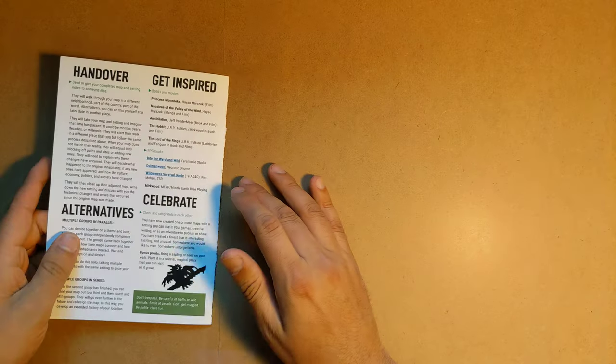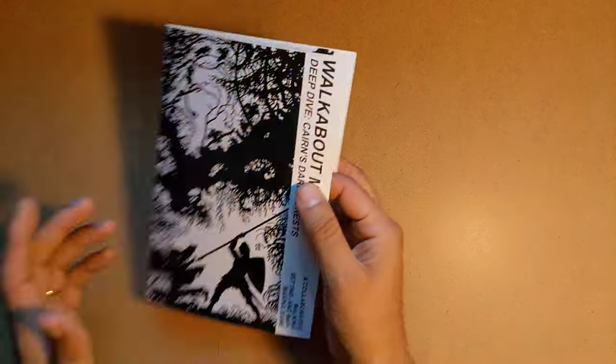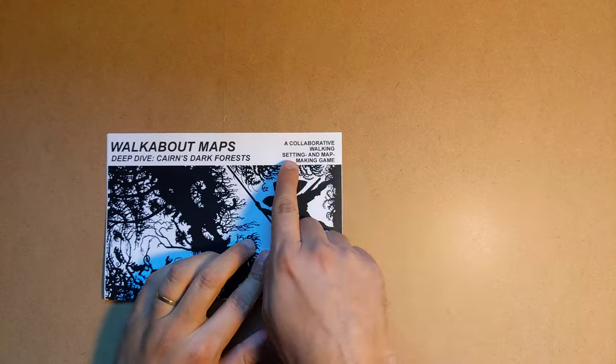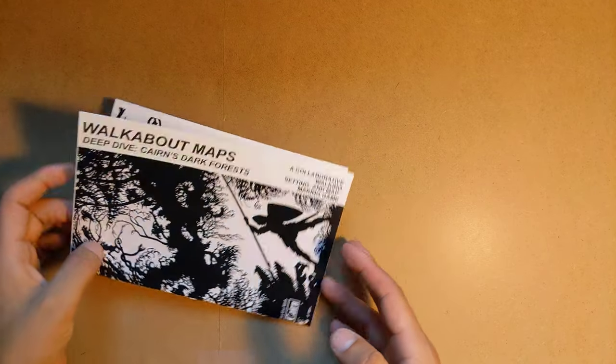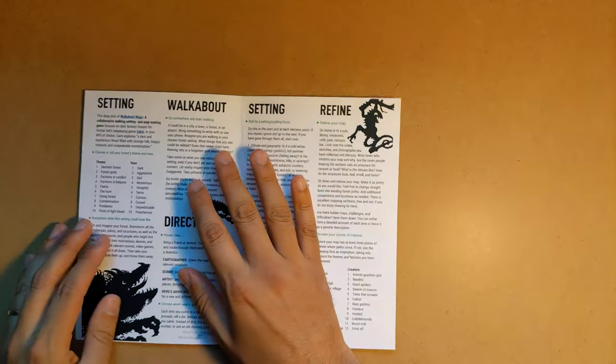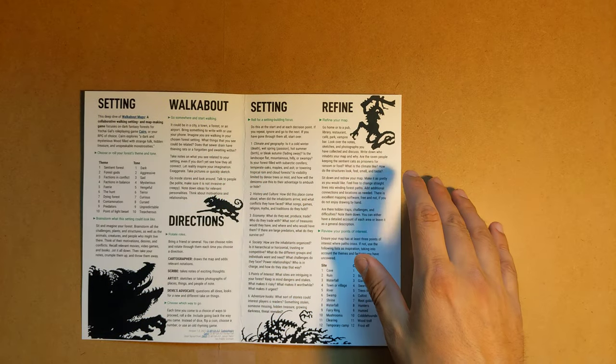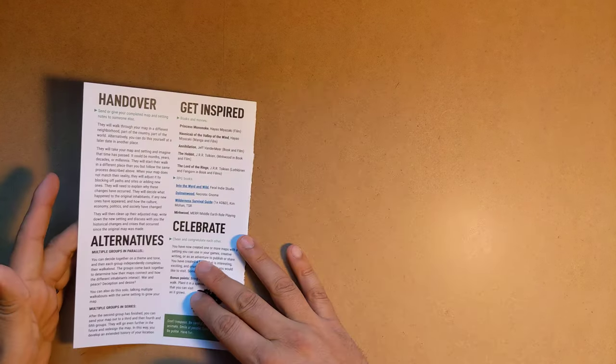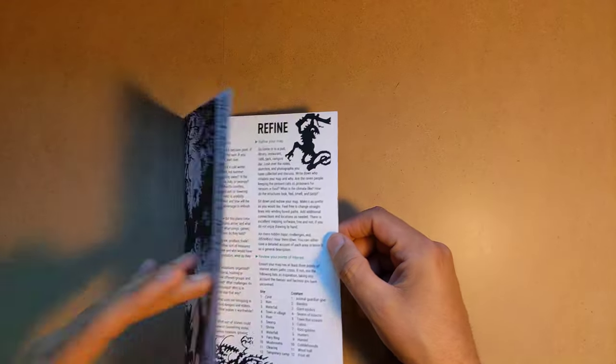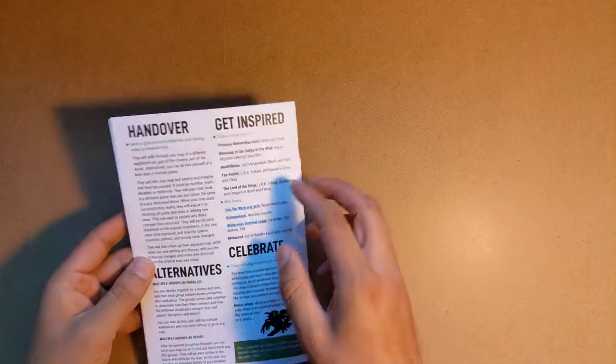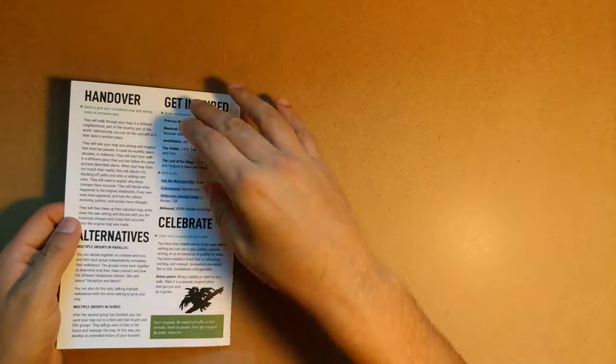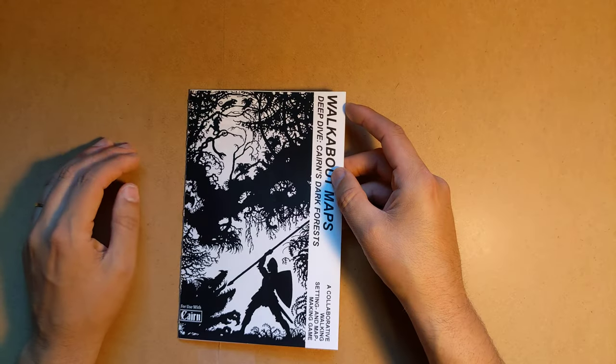Next, this is a book from Cadejo Negro, and it is a hack of another supplement by the same author. It's a collaborative walking setting and map making game. You're supposed to walk while you're making this. But this is the version for Cairn, and it is using a lot of the same art from the actual game, as you can see here. The original style was 24XX, I think, was what the original supplement was made for. And you can kind of still see that here, which I like.